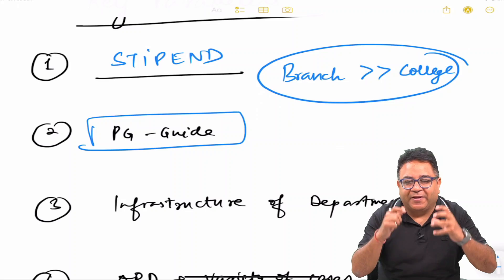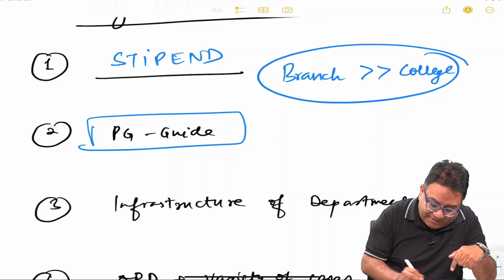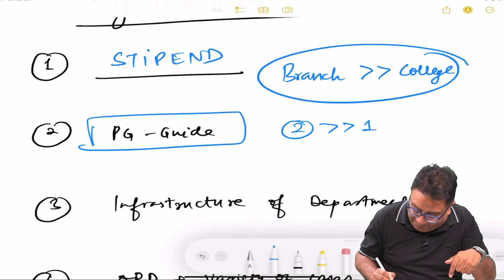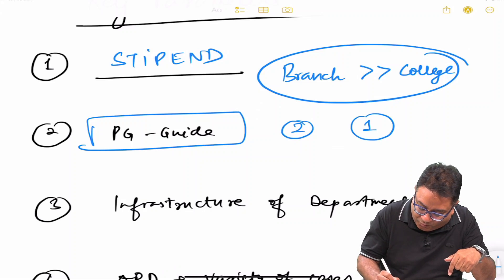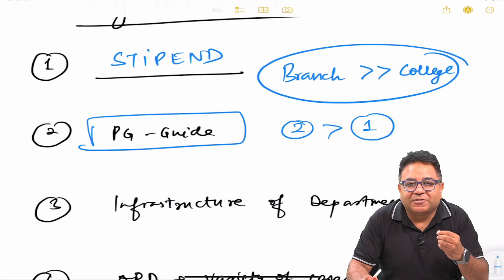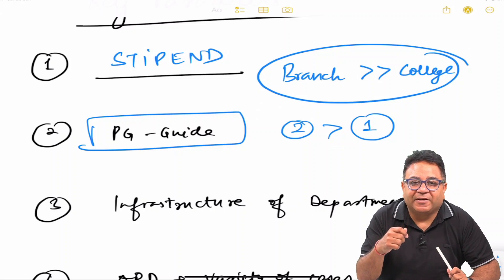Actually, this matters the most. You will realize once you enter your PG and you will thank me for making a wise decision based on this parameter. I would still rate parameter 2 a little above, has more weightage, because dentistry or any stream we need to learn from a learned man or ma'am.